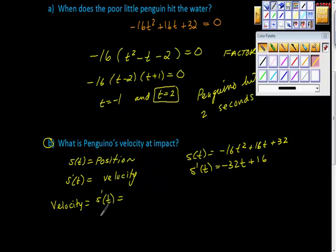We also know that his impact, he impacts the ground two seconds after his fall. So we have negative 32 times 2 plus 16 equals negative 48 feet per second.